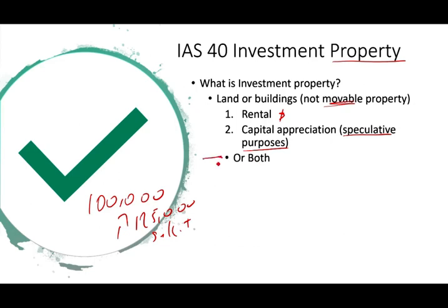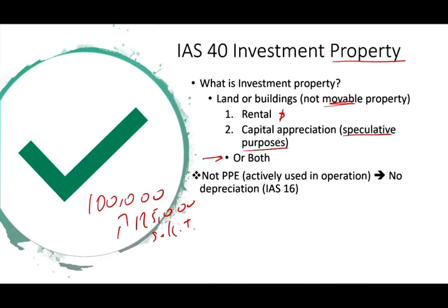Or it could be both — you collect the rent now and later realize your gain. Now we have to understand that investment properties are not property, plant and equipment, because the definition of PP&E is that they are actively used in operations. Actively used means you are using the building to produce units or to house your operation — that's not investment property. Investment property has no depreciation, whereas PP&E is depreciated. PP&E follows IAS 16.